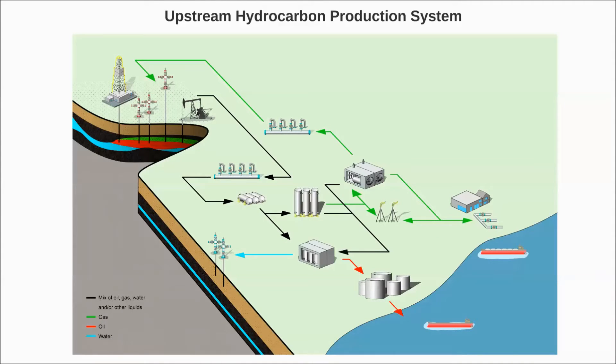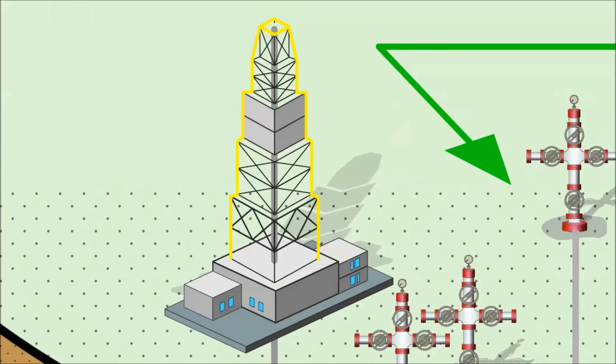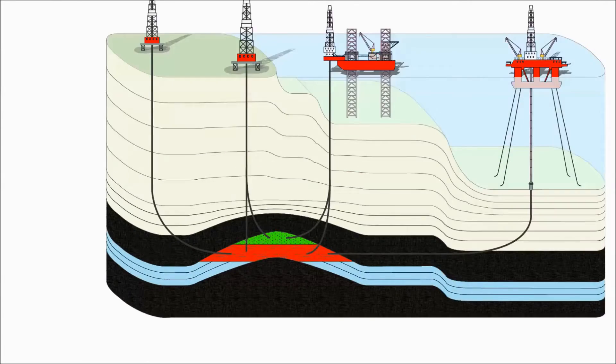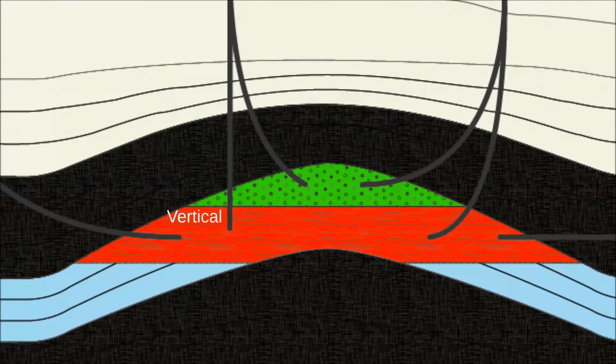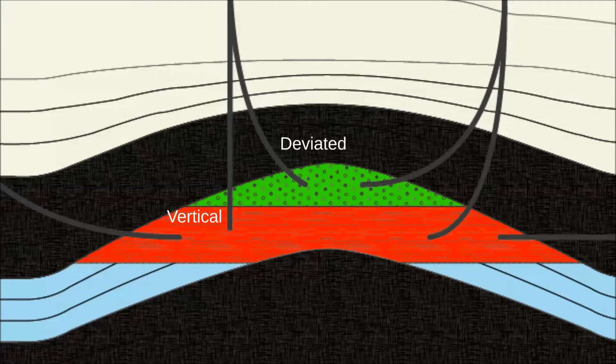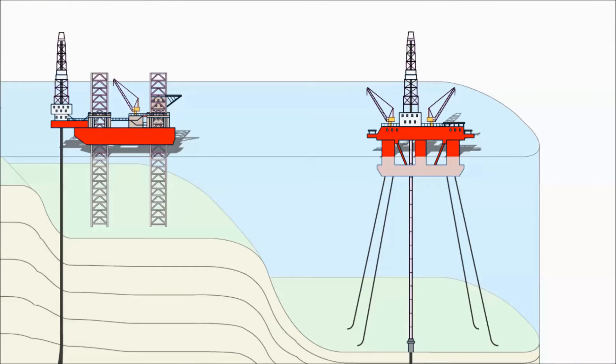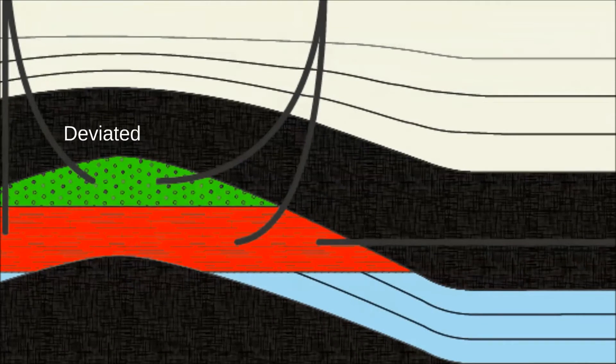If we follow the flow paths of the hydrocarbons, the next stop in our tour will be the drilling of the well. Wells can be drilled on land or offshore. Also, wells can be drilled vertically or deviated. Deviation enables us to tap the reservoirs from under inaccessible places. Offshore, the deviated wells allow us to drill multiple wells from a single platform.